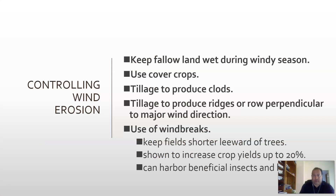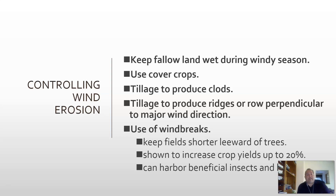In terms of controlling wind erosion, we want to keep fallow land wet during the windy season. If we're not going to have something planted or it's not the right time for our crop, that's okay, but the land needs to be kept wet — the soil needs to be wet so it sticks together, it's heavy, and it doesn't want to go anywhere. Another idea is to use cover crops, even if you're not planting anything during the off-season, just plant something to make sure the soil is ready for you come springtime. You can also till the land to produce clods — getting the soil to come together in bigger particles so it sticks together better and won't erode away.